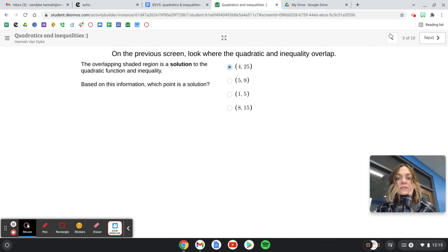Going on to the next screen, it says: look where the quadratic and inequality overlap. The overlapping shaded region is a solution to this system. Based on the information, which point is a solution?